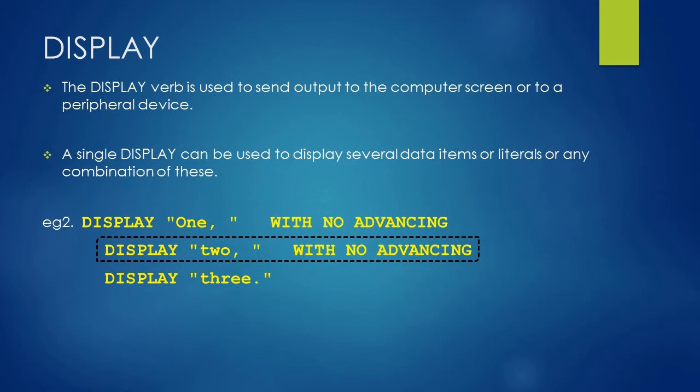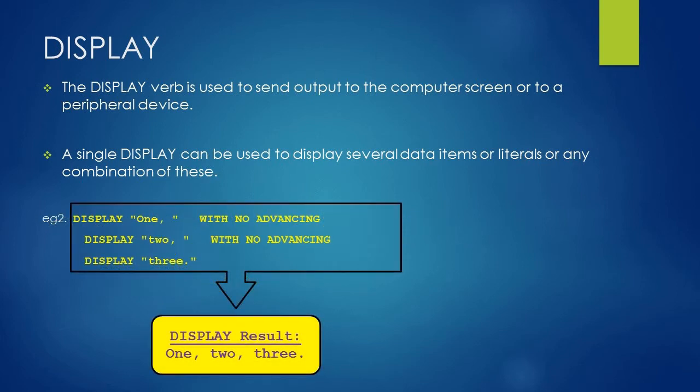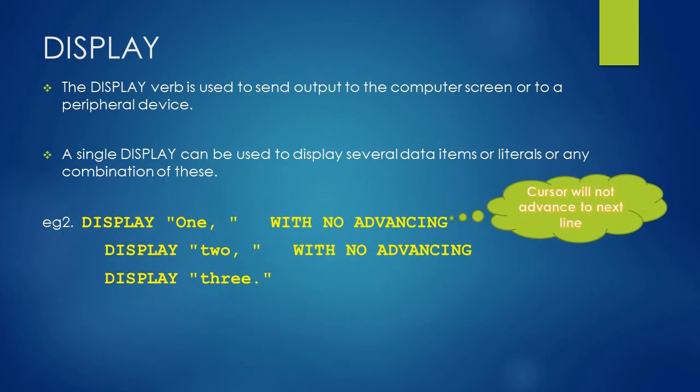And after that, we have used a DISPLAY statement with literal value 'three.' and with a period. So the output of all these three DISPLAY statements will be 'one, two, three.' all in a single line. Because of the NO ADVANCING clause, the cursor will not move to the next statement. If we are not using NO ADVANCING clause for each DISPLAY statement, the output will generate on the next line.